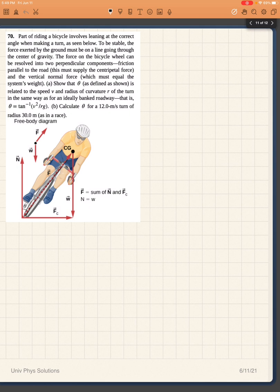It's going to have a component into the circumference of the turn and a component up against gravity. So what we can see is that the x component of the normal force will have to be equal to my centripetal force. And my y component will have to be equal to the force of gravity. Otherwise, the rider would fall or would not make the turn.